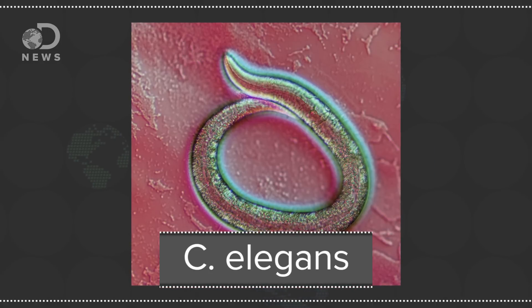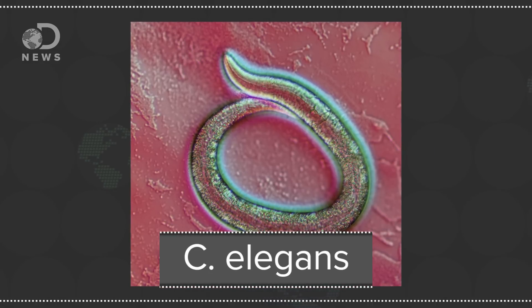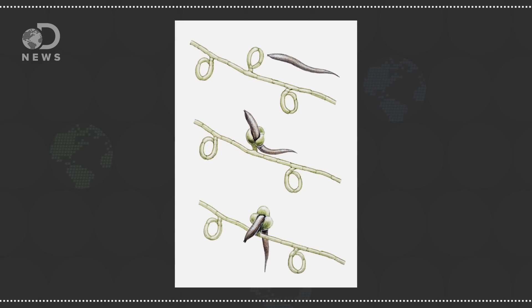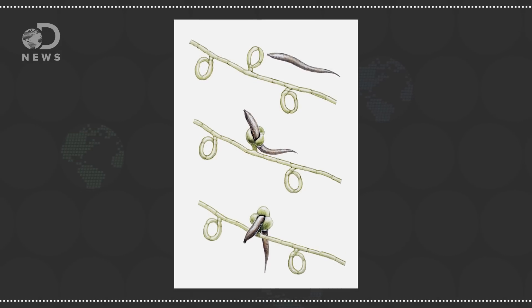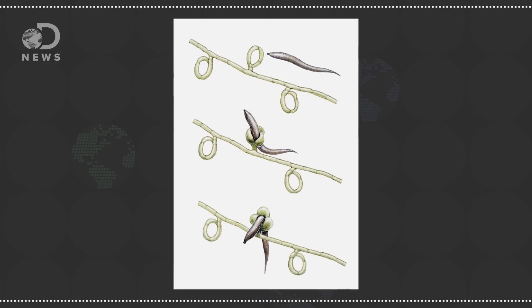The nematode C. elegans is a tiny round worm that lives in soil. It crawls about, moving its head from side to side to feel out its environment. But it has a very clever enemy, a carnivorous fungus that forms small loops like nooses. When the C. elegans pokes its head through the noose, it tightens,